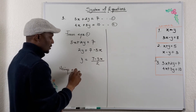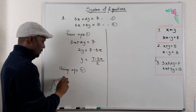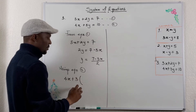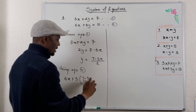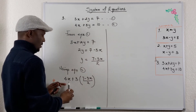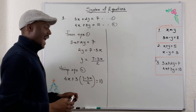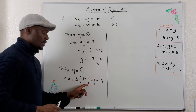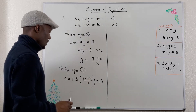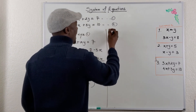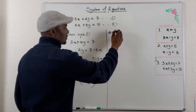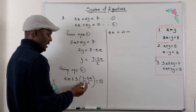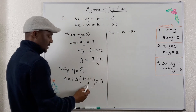Remember, I isolated y from equation 1, so I have to substitute into equation 2. Using equation 2, I have 4x plus 3y, and instead of writing y I write (7 minus 3x) divided by 2 in parentheses, equal to 10. My next task is to open this up — multiply 3 by 7 and multiply 3 by negative 3x — but don't forget the 2 is still in the denominator. So this becomes 4x plus (21 minus 9x) divided by 2, equals 10.